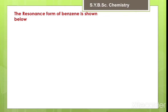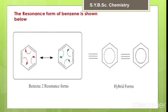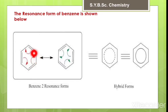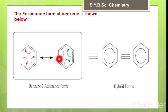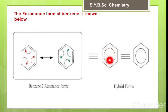The resonance form of benzene is shown below. This is the simple form of benzene and this is the actual symbol of resonance. Benzene has three double bonds which are continuously delocalizing — this bond shifts here, this goes here, and so on. Benzene has two resonance forms and a hybrid form, where the three double bonds can be shown in dotted lines or by using a circle. This is called the hybrid form.